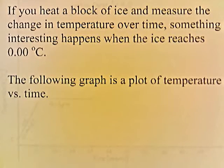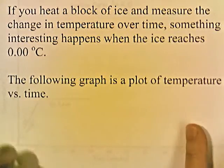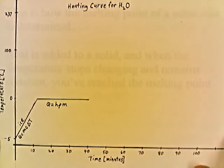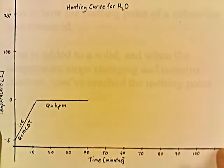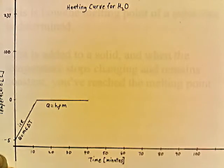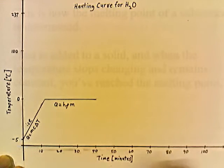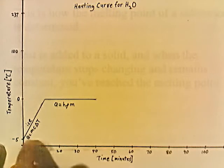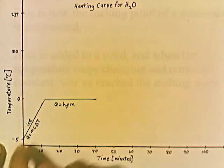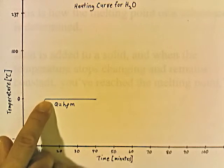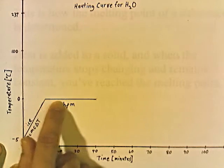If you heat a block of ice and measure the change in temperature over time, something interesting happens when the ice reaches 0 degrees. Here's a heating curve for H₂O. We have ice at negative 5, and as heat is added over time, the temperature of the ice increases up to 0 degrees. But once it reaches 0 degrees, if you continue to add heat, the temperature does not increase — it stays flat.